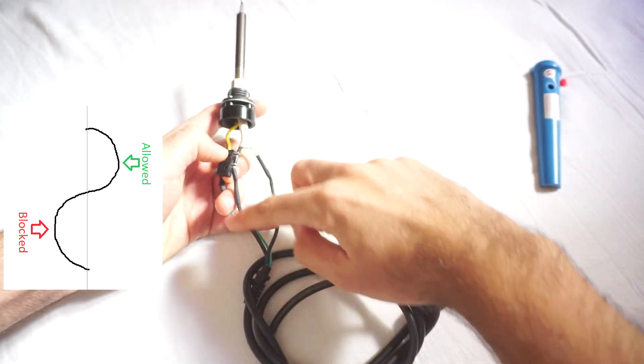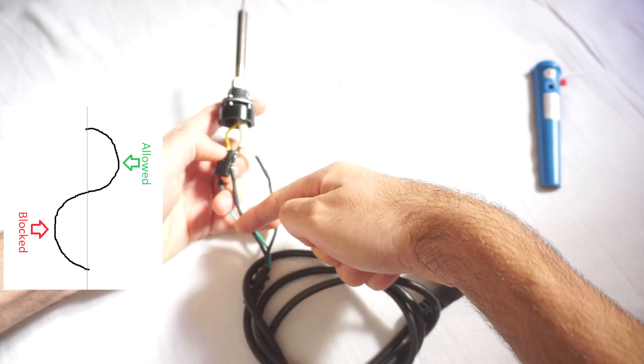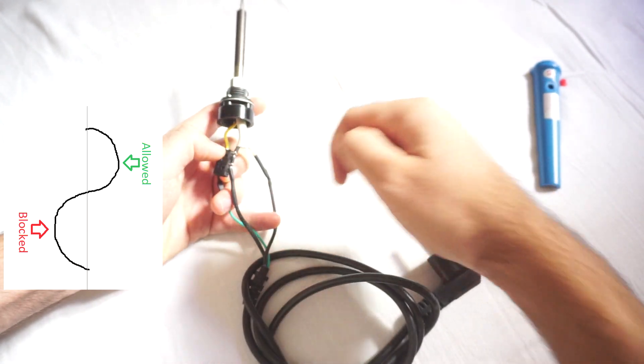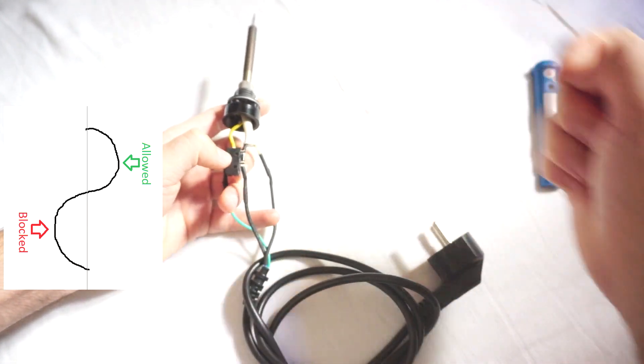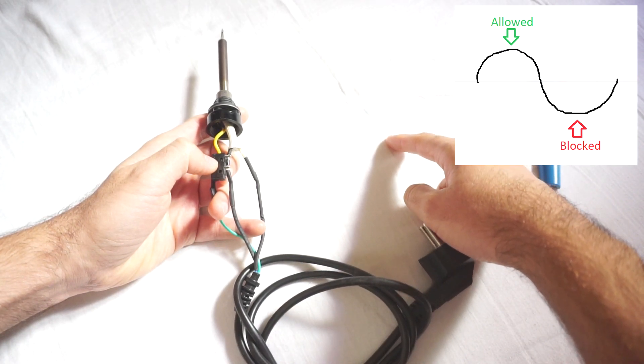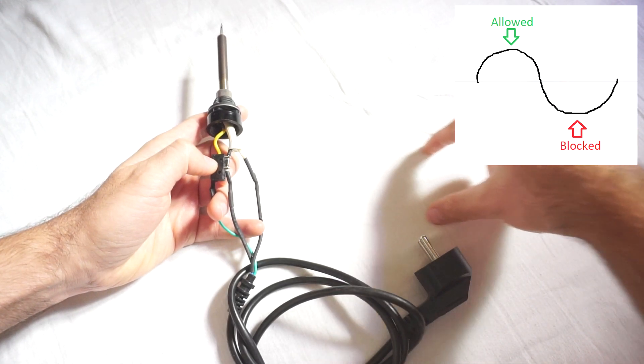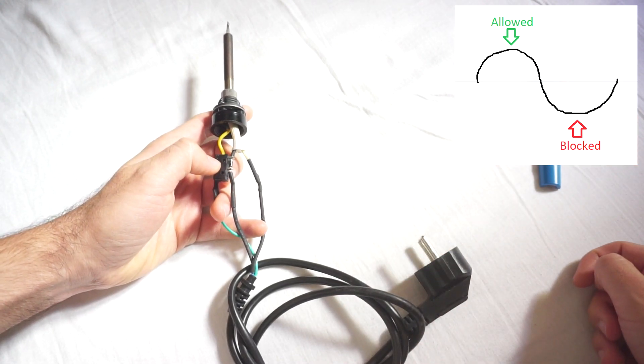But it cannot go up and then down on the other wire - it cannot go to the left because there's a diode. So it's heating when the sine wave is up, but it's not heating when the sine wave is down, because this portion of the sine wave of the electric current is being blocked by that diode.